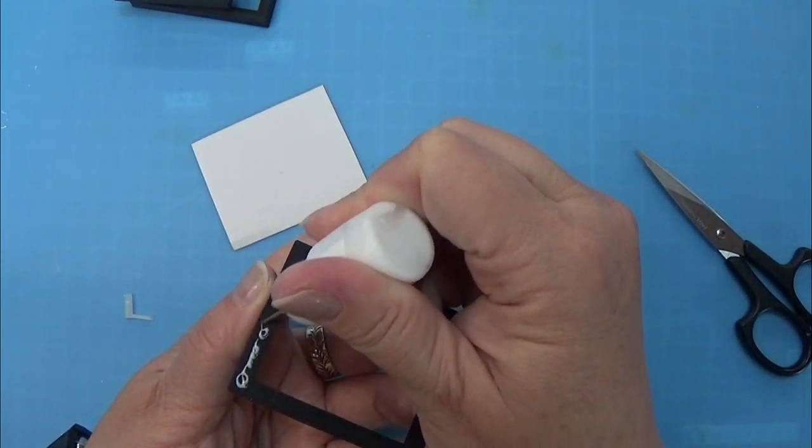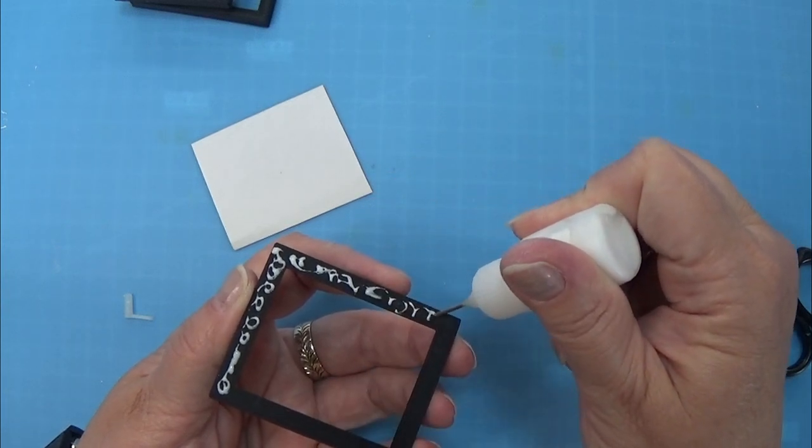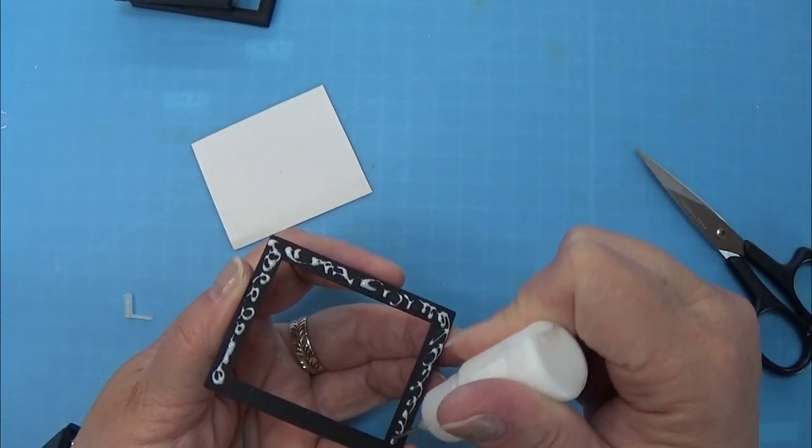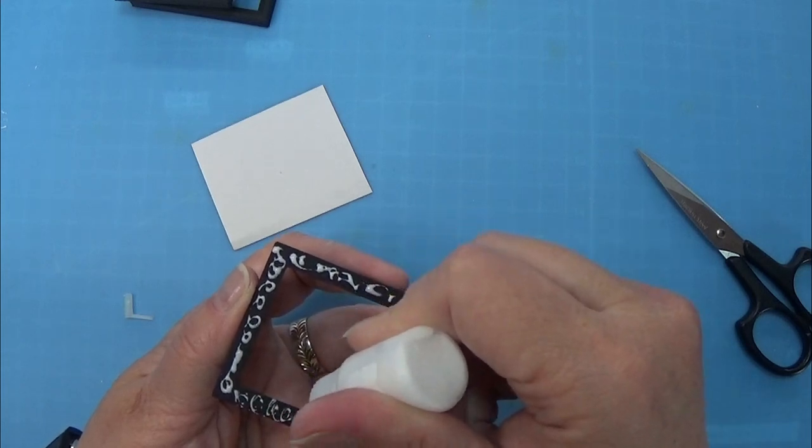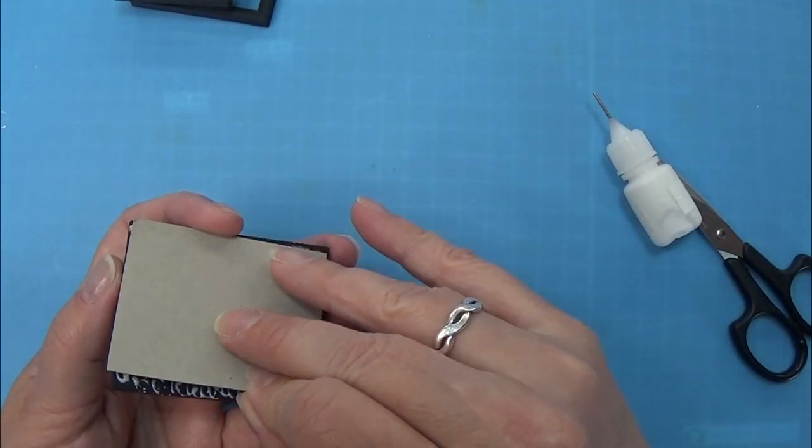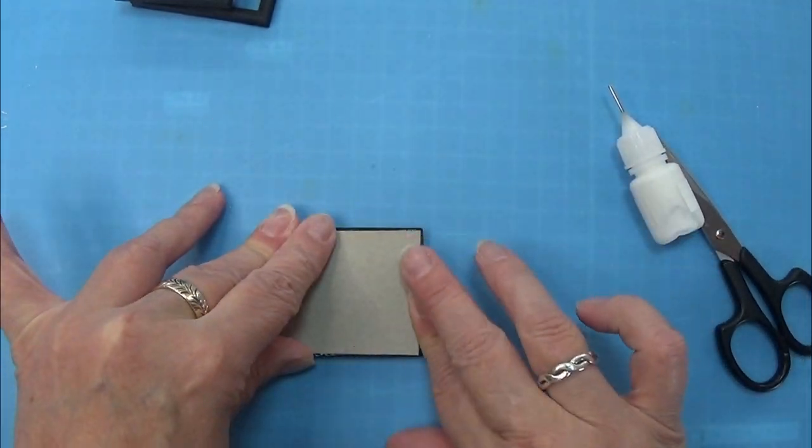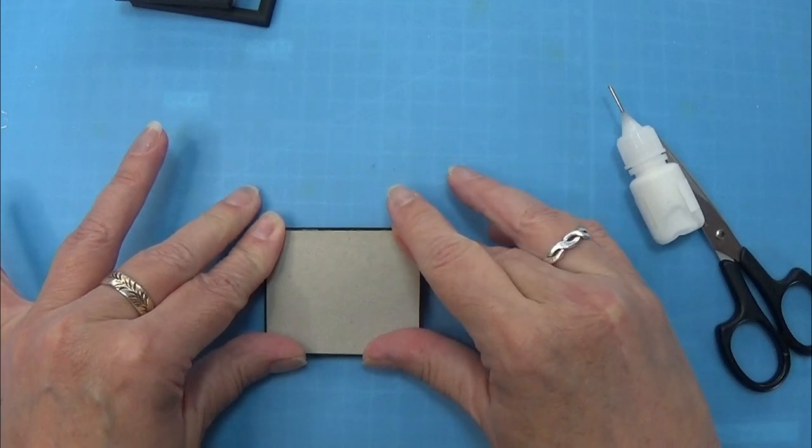I am using my tacky glue that I put into this little squirt bottle because it is much easier to distribute the glue with this little metal tip and then I am just taking my piece of cardboard here and placing that on top of the frame and making sure everything is nice and neat.